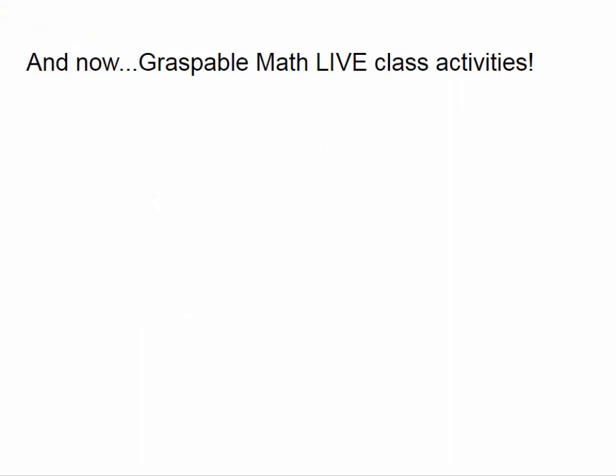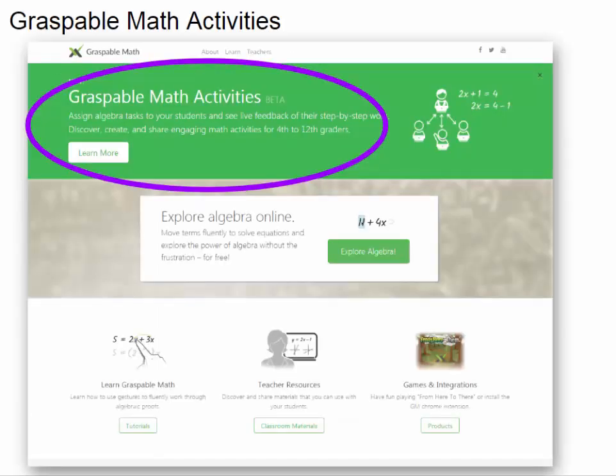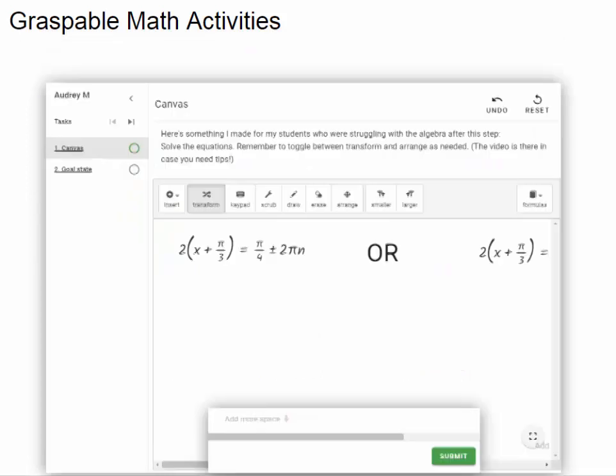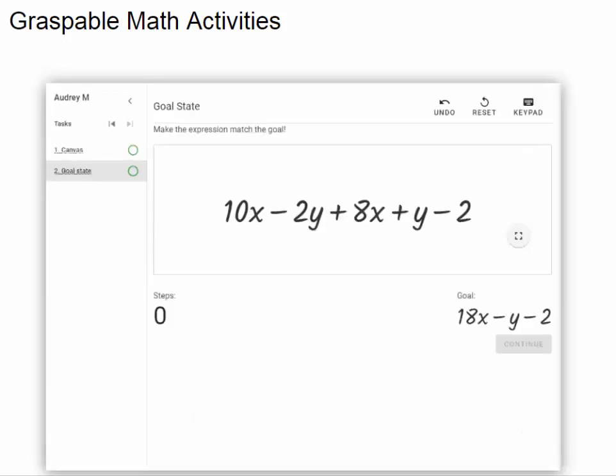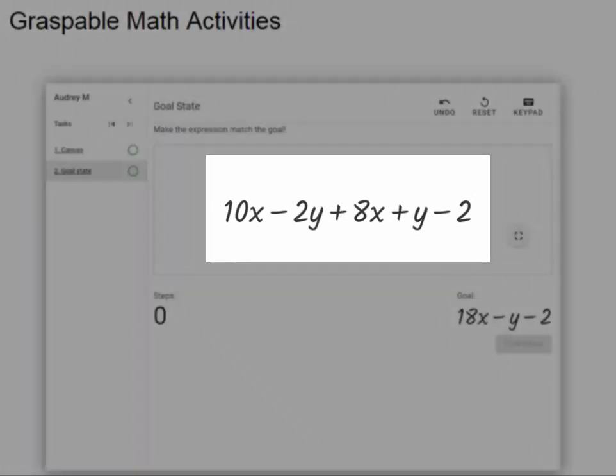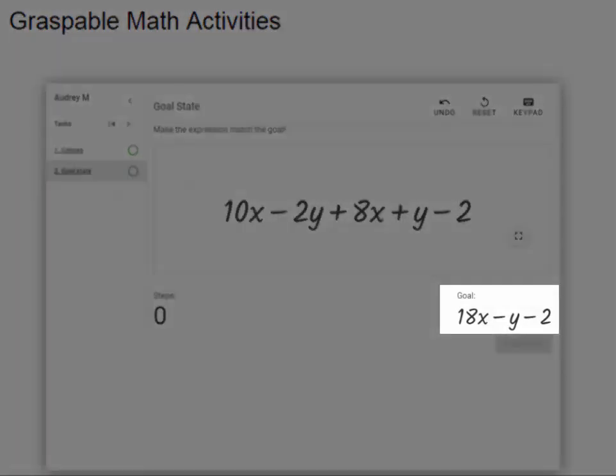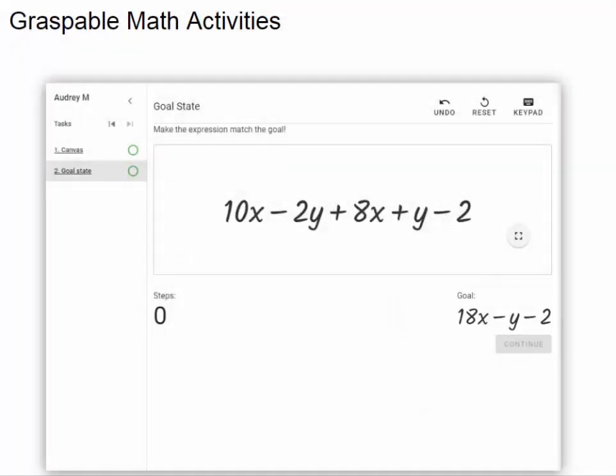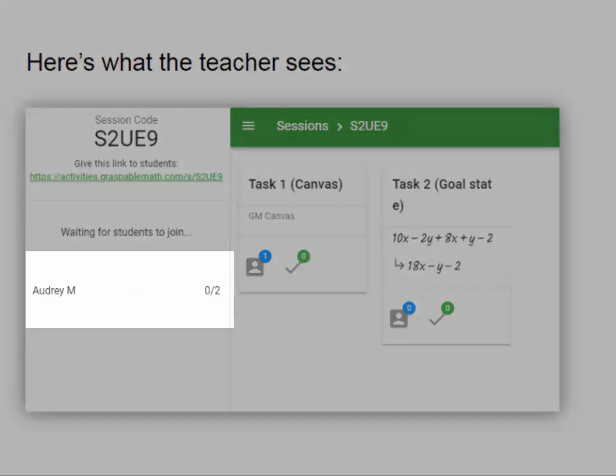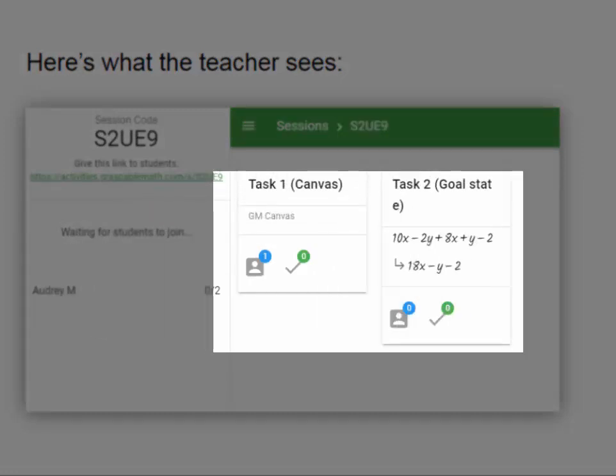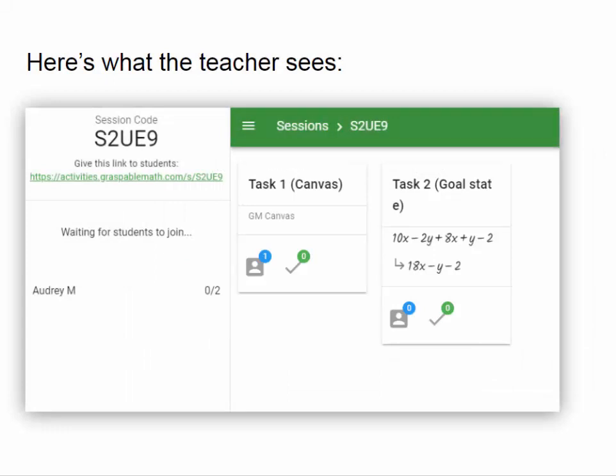Graspable Math has also just released the beta version of their live class activities, by which you can create activities for your students to do. And those activities consist of as many tasks as you want. For example, you can have them do a task on a canvas like you've just seen, or there's a task called a goal state, where students are given an initial expression and they have to interact with it to get it to look like the goal state. In order to get your students in this activity, all you have to do is give them a link. And while they're working, this is what you will see. You'll see who is in the task, you'll see what tasks they're working on, and you can click on any one of their names to see exactly what they're doing live during the class.